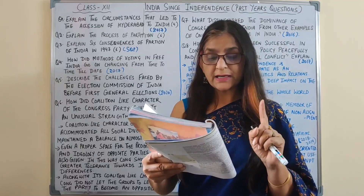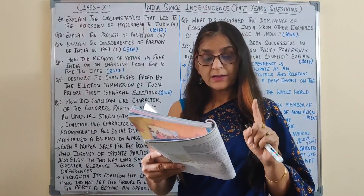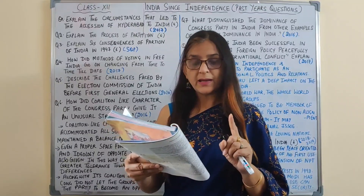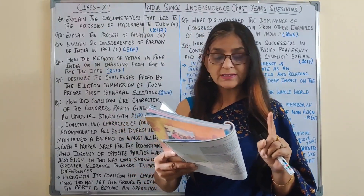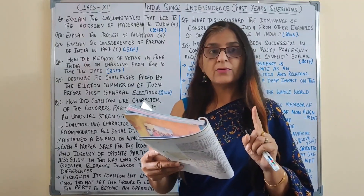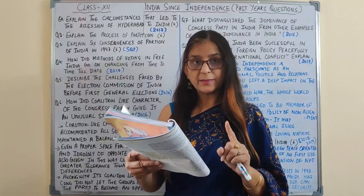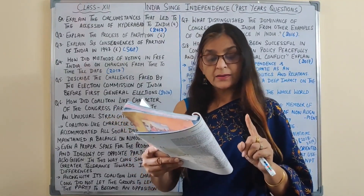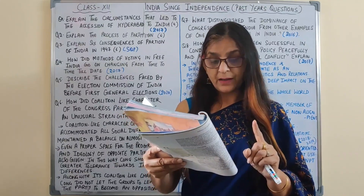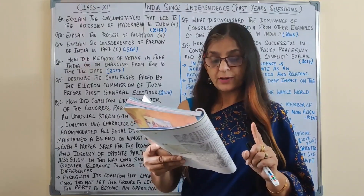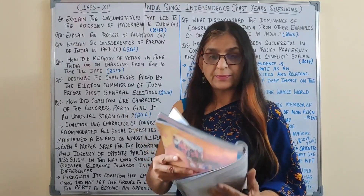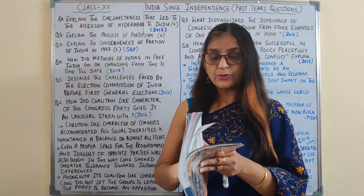Hyderabad, the largest of the princely states, was surrounded entirely by Indian territory. Its ruler carried the title Nizam and he was one of the world's richest men. The Nizam wanted an independent status for Hyderabad. He entered into what was called the Standstill Agreement with India in November 1947 for a year while negotiations with the Indian government were going on. In the meantime, a movement of the people of Hyderabad state against the Nizam's rule gathered force. The peasantry in the Telangana region in particular was the victim of Nizam's oppressive rule and rose against him. The communists and the Hyderabad Congress were in the forefront of the movement. The Nizam responded by unleashing a paramilitary force known as the Razakars on the people, and the atrocities and communal nature of the Razakars knew no bounds.